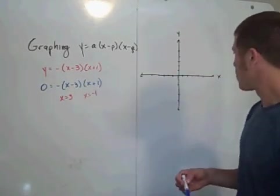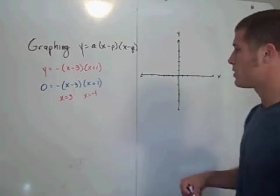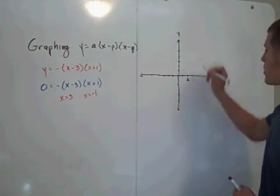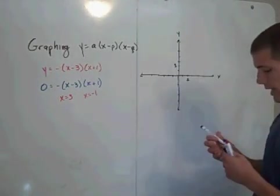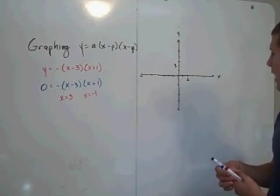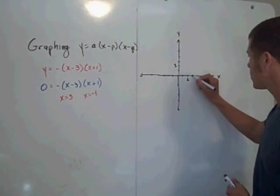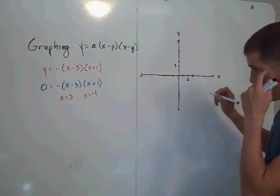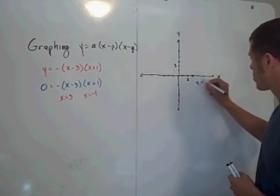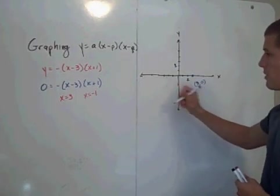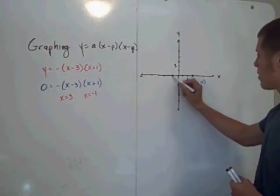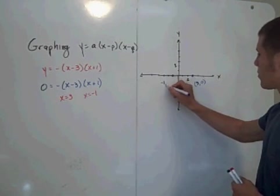So then you can plot your x-intercepts. Make sure you have an x and y-axis with a scale. I'll quick put a scale on there. And so we have an intercept at x equals 3. That's here. That's the point 3, 0. And we also have an x-intercept at negative 1 here. This is the point negative 1, 0.